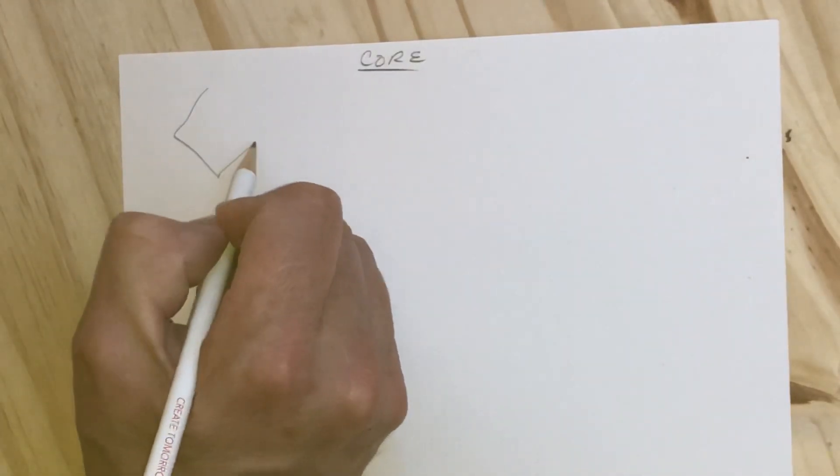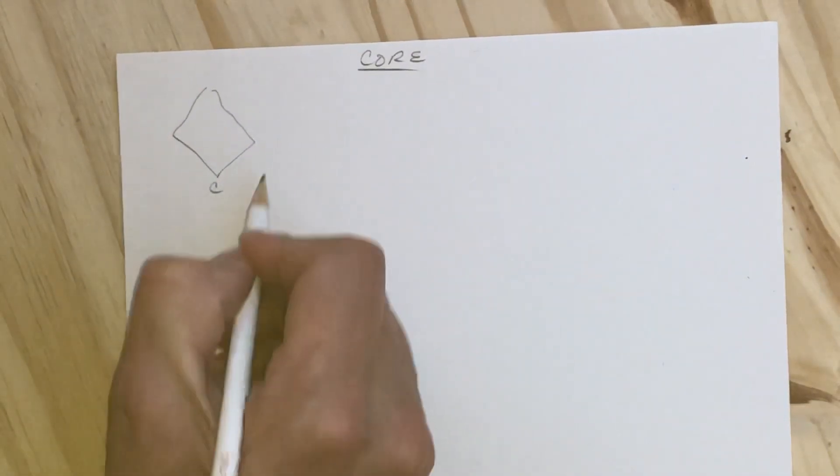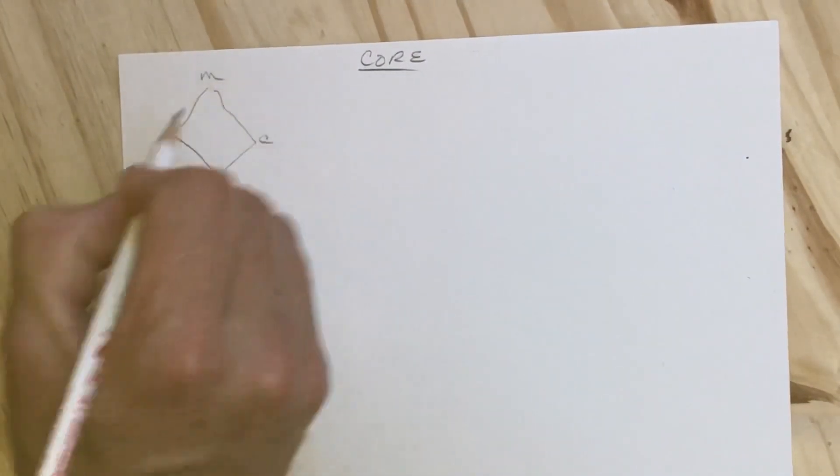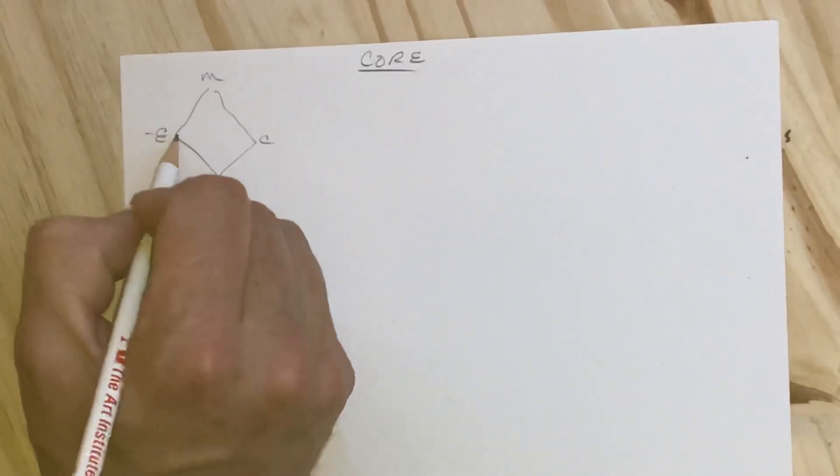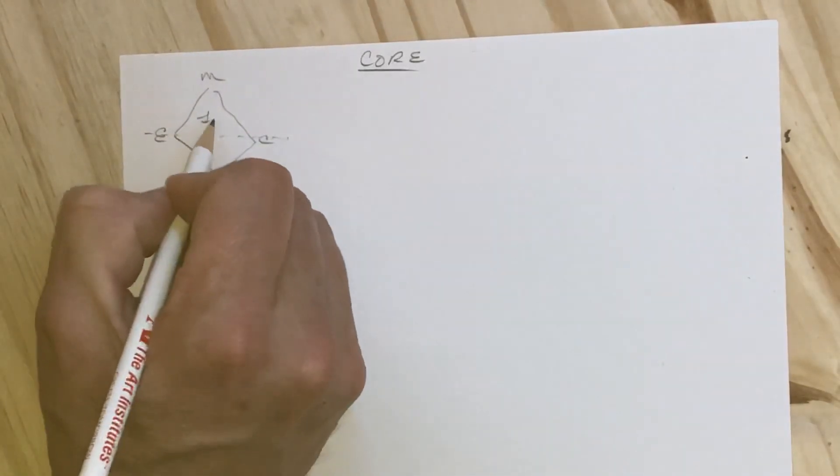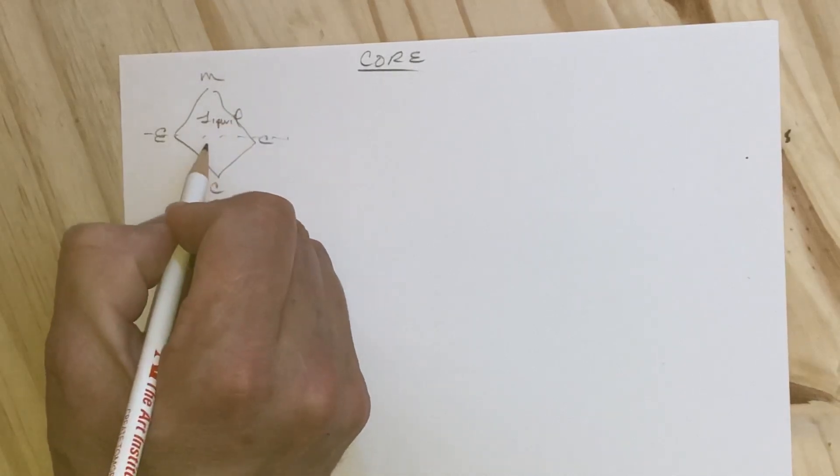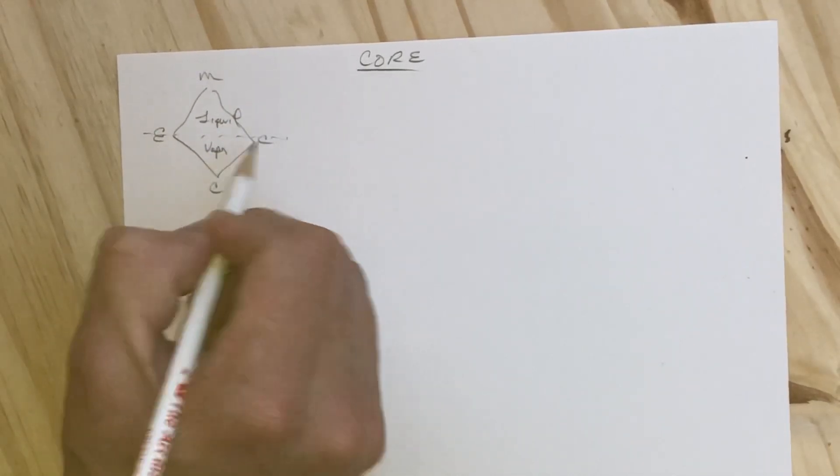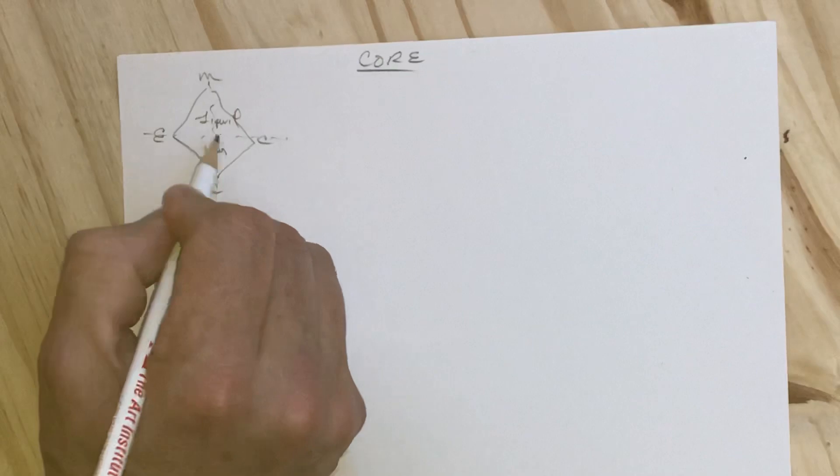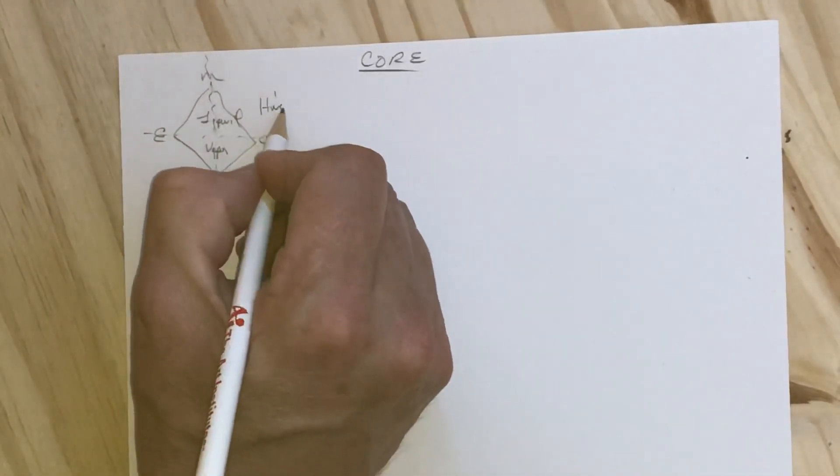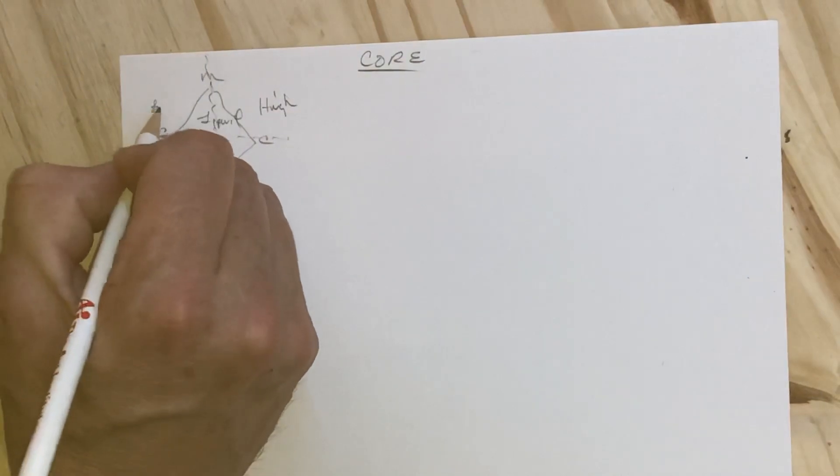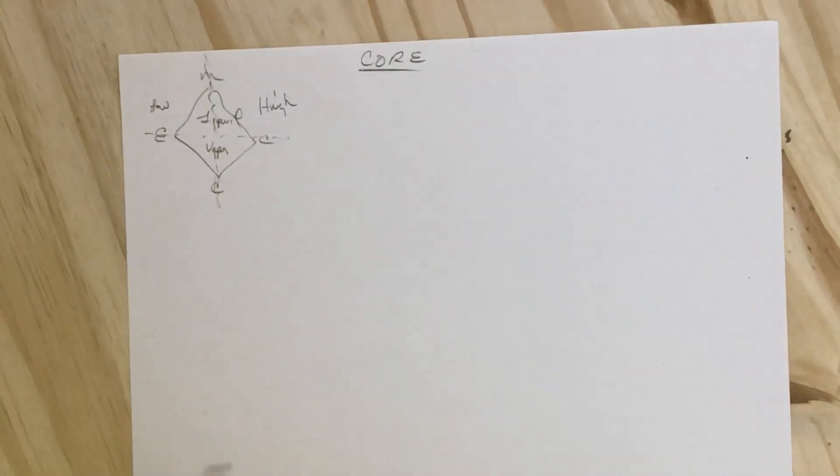First, we have the baseball diamond refrigeration system: CCME - compressor, condenser, metering device, and evaporator. Everything above here is liquid, everything below is vapor. If I divide it again halfway through, everything on the right is high, everything on the left is low.